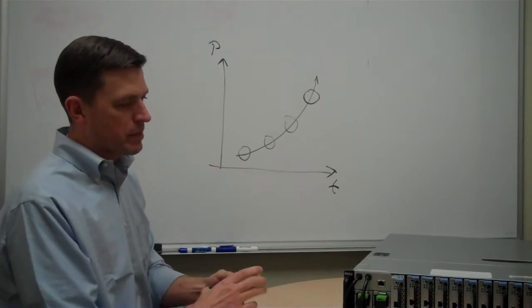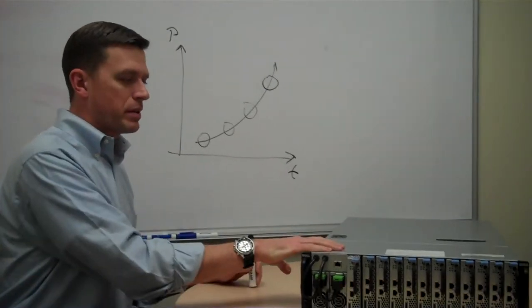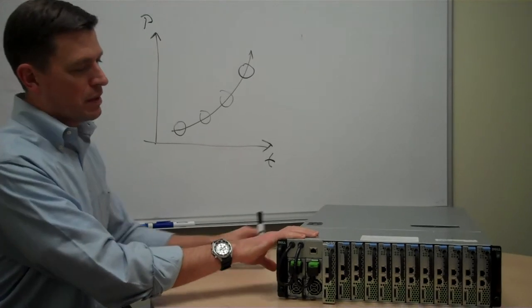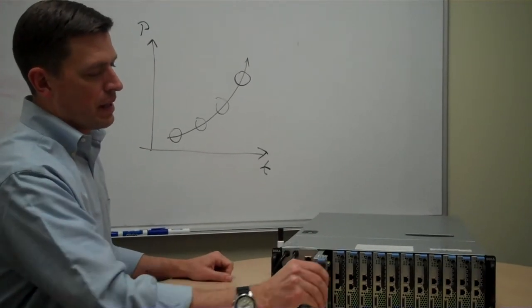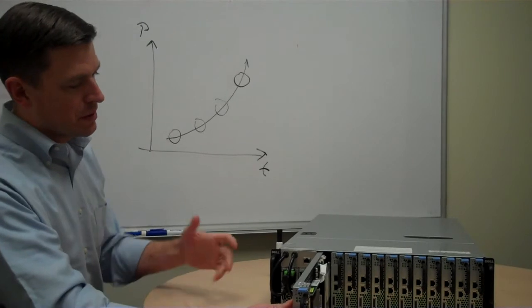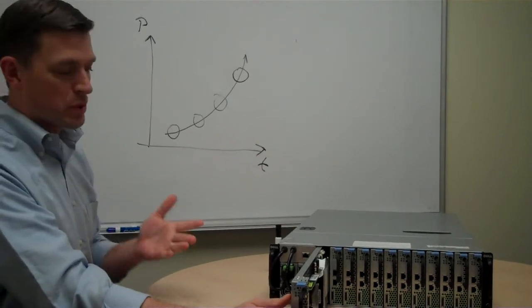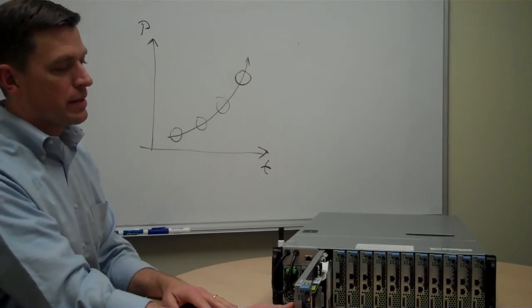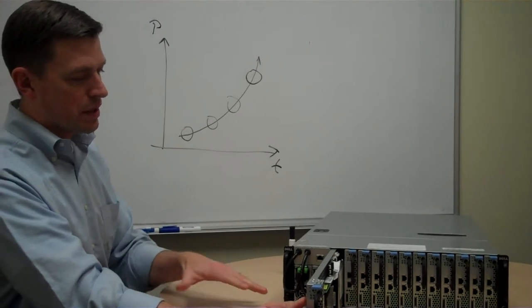And so what you have in front of me here is really our second generation of the Lightweight Server. This is in the PowerEdge C family of products. And one thing you'll notice is that all the accesses here are on the front, which will be in the cold aisle in the data center. And this is intentional.